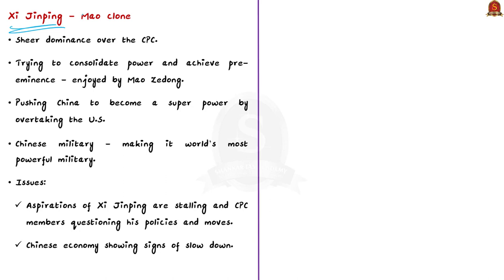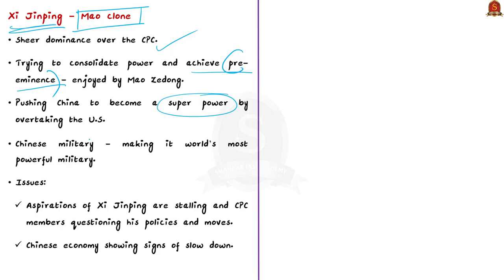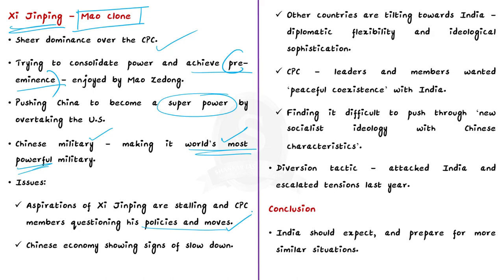Even within the Communist Party of China, some leaders wanted peaceful coexistence with India, which was a problem for Xi Jinping's aspirations. Xi Jinping's 2017 ideology — 'Xi Jinping Thought on Socialism with Chinese Characteristics for a New Era' — a blueprint for consolidating power at the national, party, and personal levels, is also not going forward due to economic slowdown and loss of support from CPC leaders and members. All these setbacks have put Xi in a difficult situation.